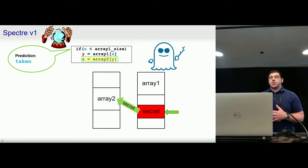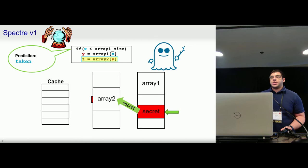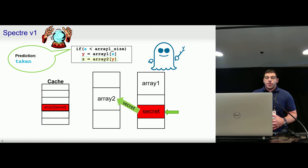But Spectre showed that there are microarchitectural side effects that will remain even after we resolve the branch. In particular, data will be pulled from this array into the cache. And now we have secret-dependent data sitting in the cache. And once we resolve the branch, all the other accesses will be undone and nothing will be committed, but the data will remain there in the cache.